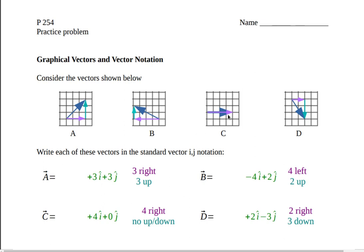And remember, if you've got something horizontal, that means there's no up and down and the j is going to be zero. And if you have something going vertically, that means there's no left or right, and so the i would be equal to zero.